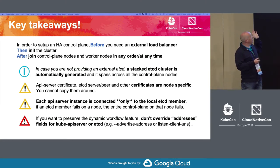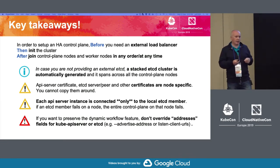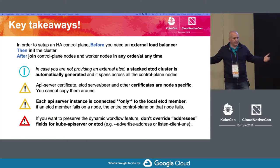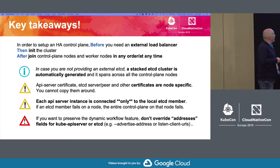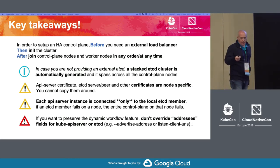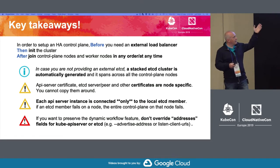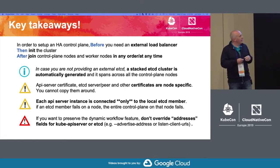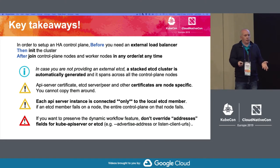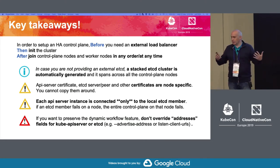The API server instance on one node is connected only to the local etcd node because we don't know in advance all the etcd members that will be created in the future. An important note we received many issues about: if you want to preserve the dynamic workflow, please don't override the address fields for kube-apiserver or etcd like advertise-address or listen-client-urls, because if you override these flags kubeadm basically preserves what you're passing and the nodes stop growing dynamically.